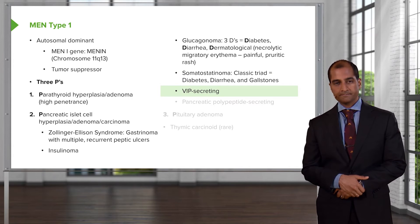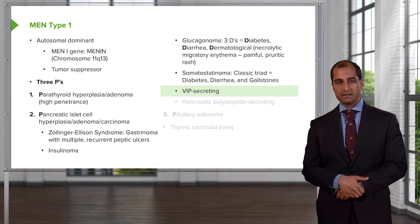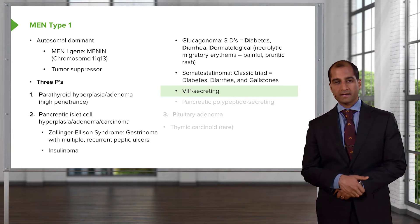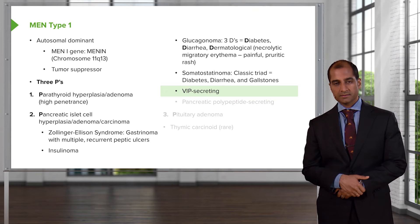Whenever you think about pancreatic islet cell tumors, most students tend to stop at gastrinoma and Zollinger-Ellison. Please do not do that anymore. If it's insulinoma, you should be thinking about glucose levels being very, very low — too much insulin. We'll be walking through that in great detail.